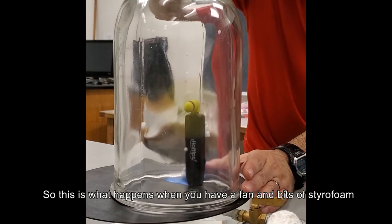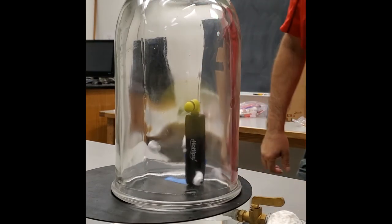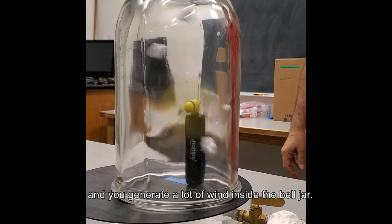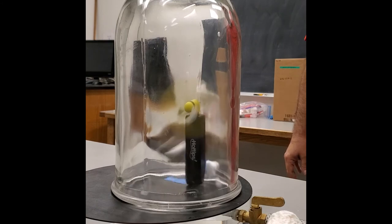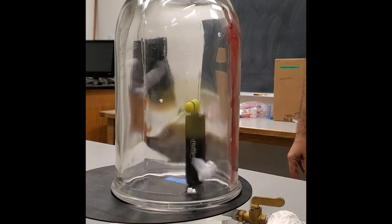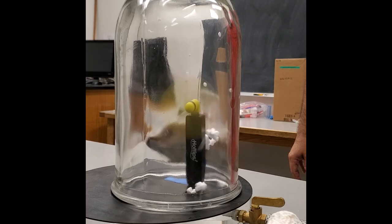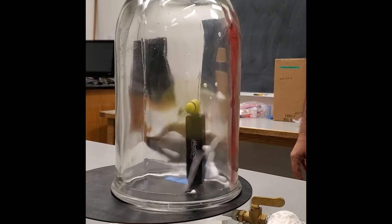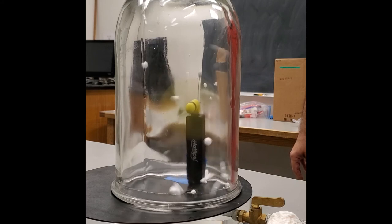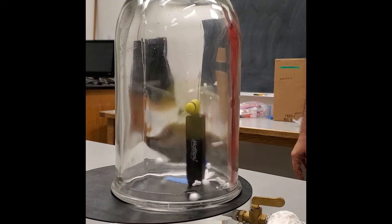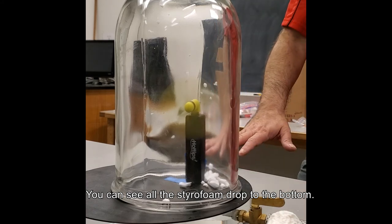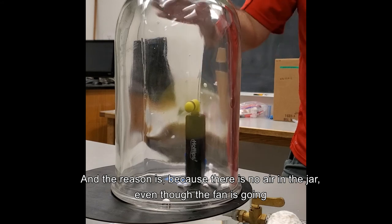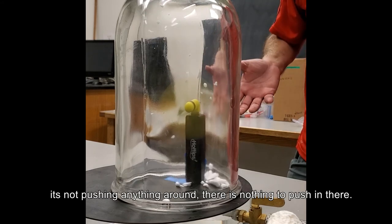So this is what happens when you have a fan, some bits of styrofoam, and you generate a lot of wind inside the bell jar. When we turn on the vacuum and remove the air from the jar, what do you think will happen? You can see all the pieces of styrofoam have dropped to the bottom. And the reason is because there's no air in this jar. Even though the fan is going, it's not pushing anything around. There's nothing to push in there.